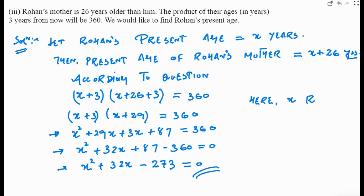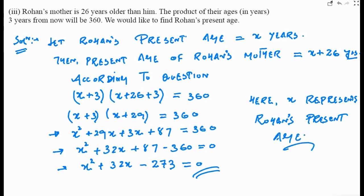This is the quadratic representation of the given situation, where x represents Rohan's present age. Now let's move to the last part of this question: a train travels a distance of 480 kilometers at uniform speed. If the speed had been 8 kilometers per hour less, it would have taken 3 hours more to cover the same distance. We need to find the speed of the train.